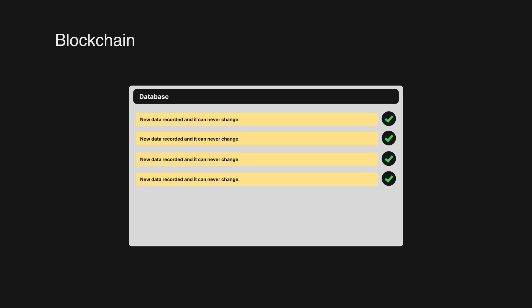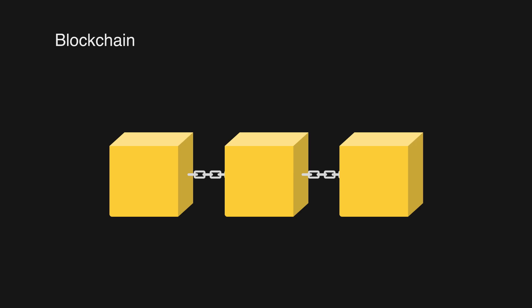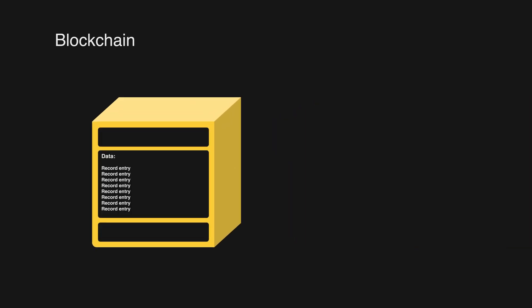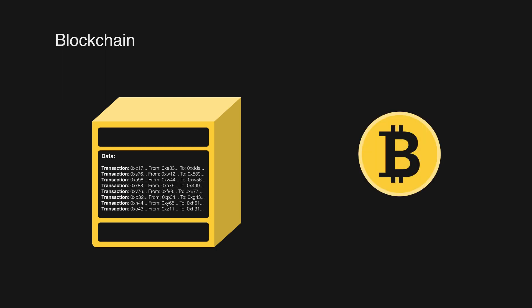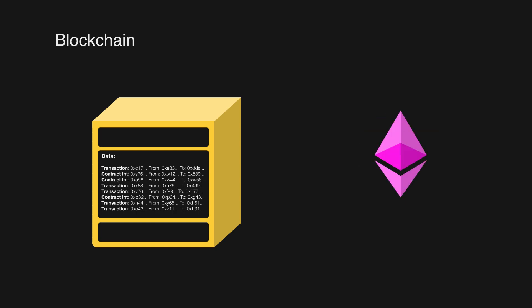In order for us to fully understand what blockchain is, let's look at it visually. Let's imagine a chain of blocks — a blockchain — and then zoom in on one block. As we can see, a block contains a set of records. These records can vary depending on the chain. In the case of Bitcoin, these records could be all transactions, and with Ethereum, these could be a mixture of transactions and contract interactions.